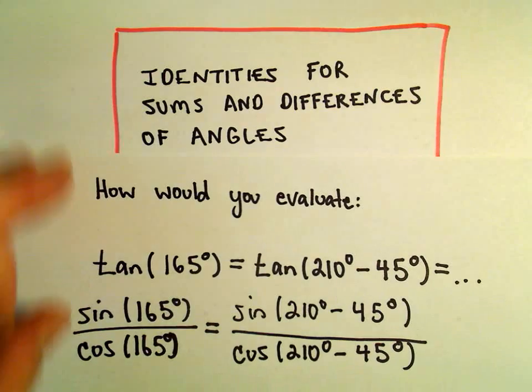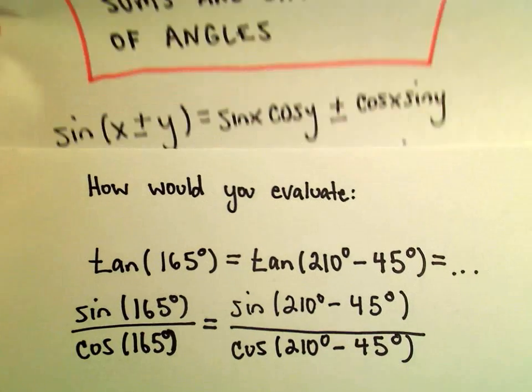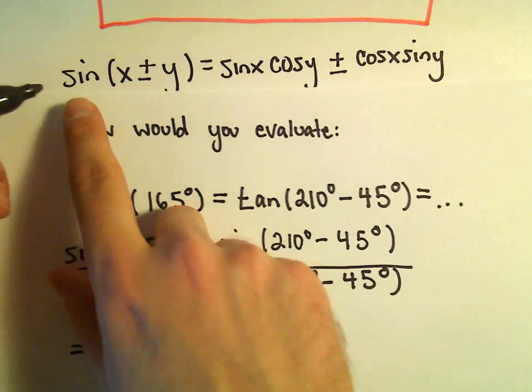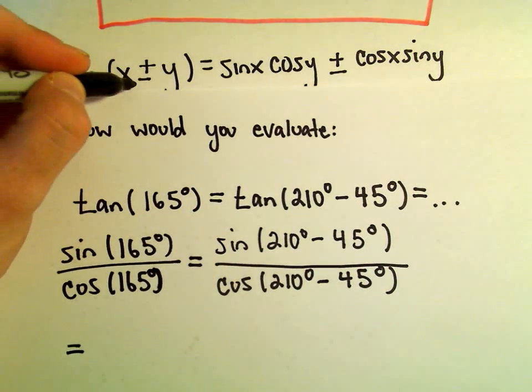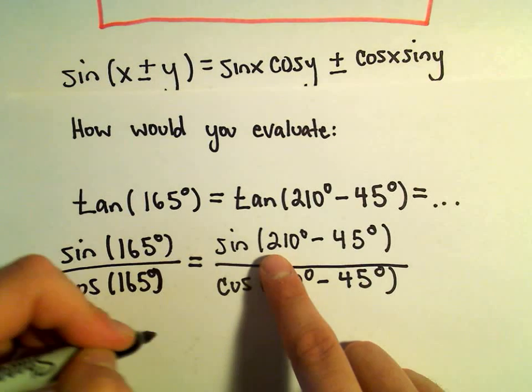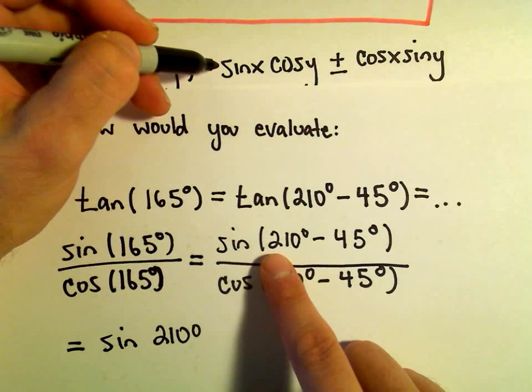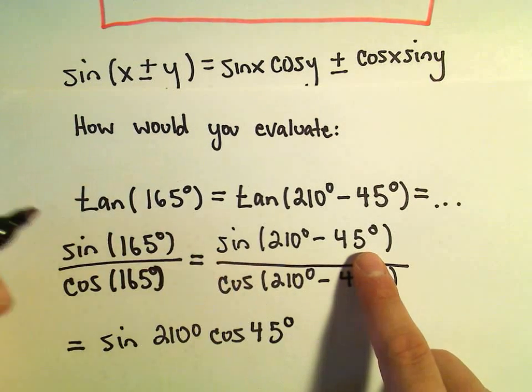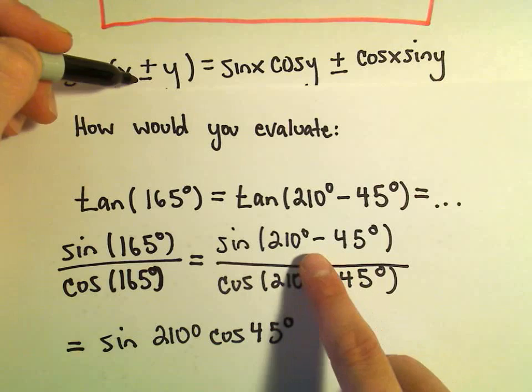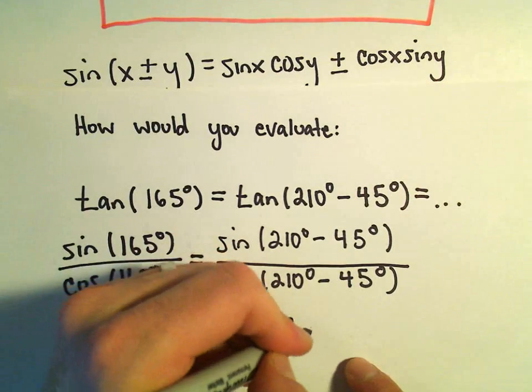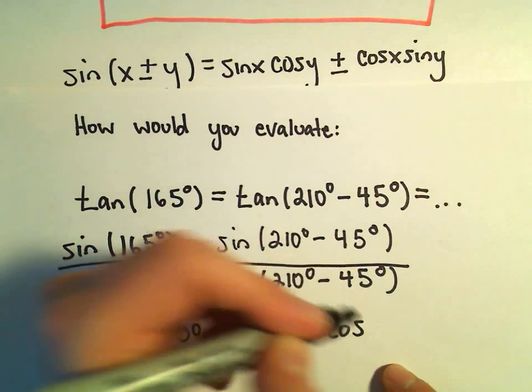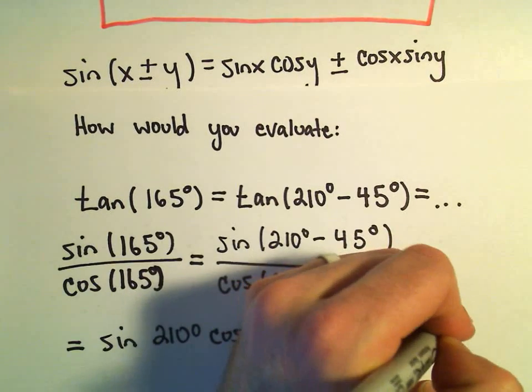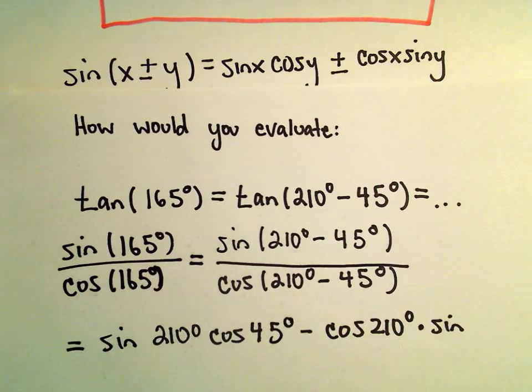And now we'll simply use our identities. If we have sine of something minus something, it says we take sine of the first thing, which is 210 degrees. We take cosine of the next value, which would be 45 degrees. If there's a negative sign, we keep the negative sign. So then we'll get cosine of 210 degrees times sine of the second, which is 45 degrees.